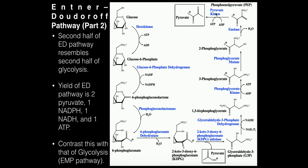One important thing is to contrast the Entner-Doudoroff pathway with glycolysis. The net outputs of glycolysis per glucose are two pyruvates, two NADHs, and two ATPs net. In the Entner-Doudoroff pathway: hexokinase burns one ATP, but phosphoglycerate kinase and pyruvate kinase each make one ATP — so we lose one but gain two back, giving us one net ATP per glucose. We still get two molecules of pyruvate, which is common between the two pathways.